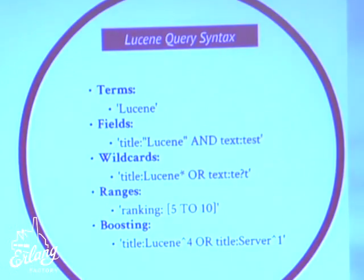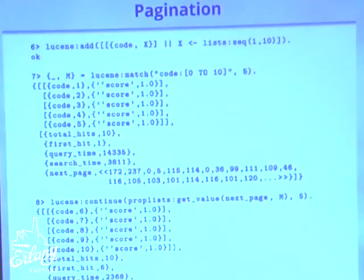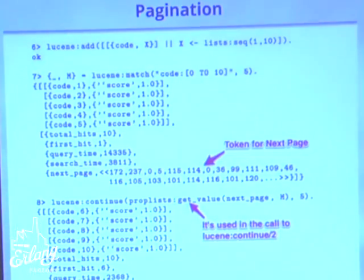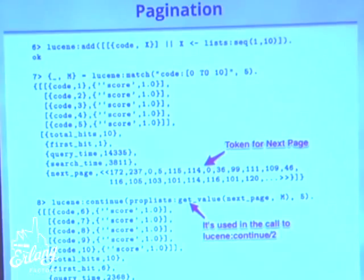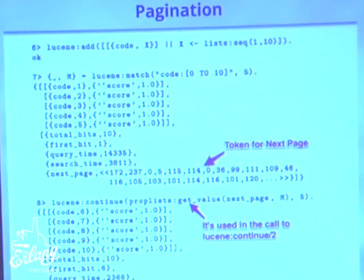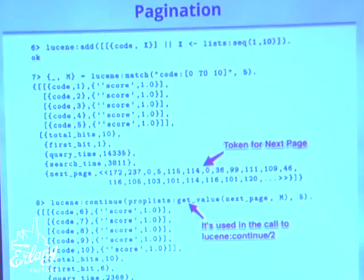Since you specify the page size, you also get pagination. In this example, I'm adding 10 documents each with one field valued 1 through 10, then matching them with a query that matches all of them and a page size of 5. Since there are more documents than the page size, the metadata includes a next page token that I use in the lucene:continue/2 function with the page size again, and we get the rest of the results.